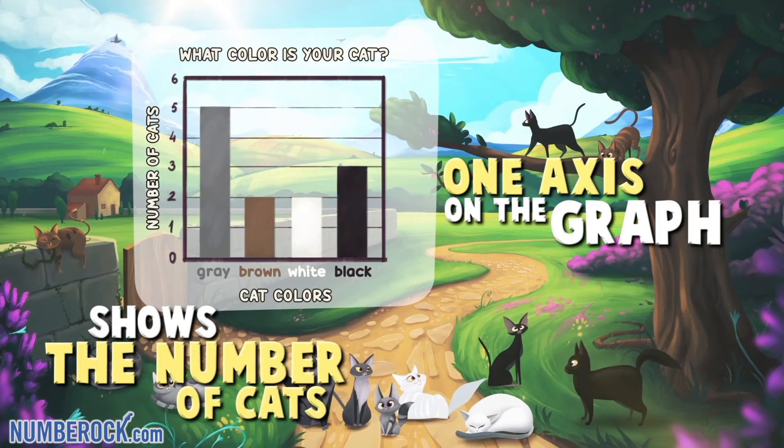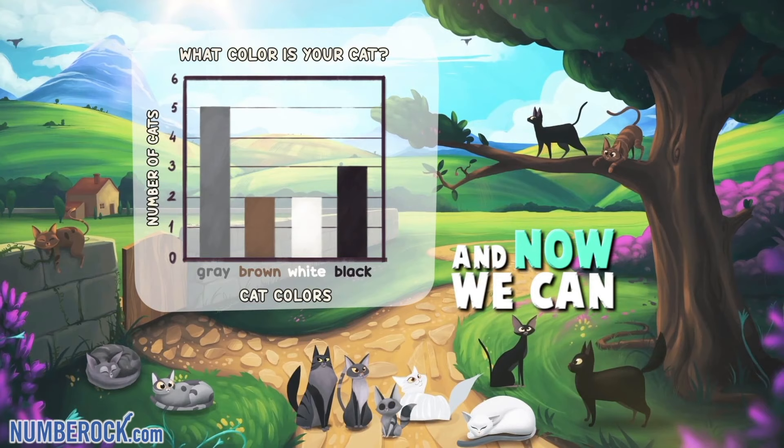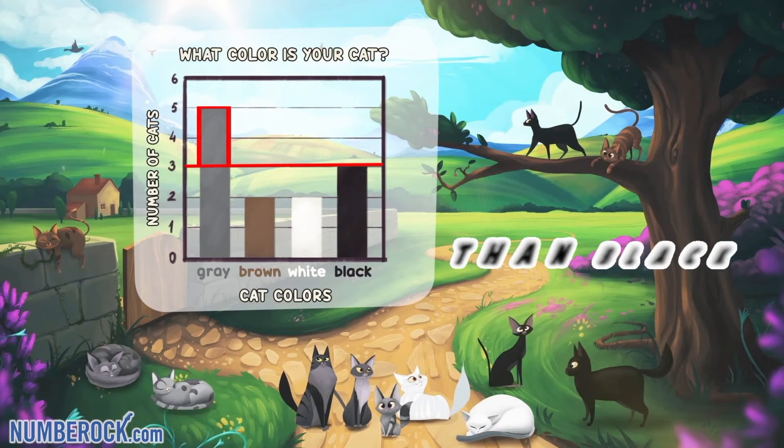The other axis tells us if they're gray, brown, white, or black, and now we can compare each group of cats. There's the fact that there are two more gray cats than black.